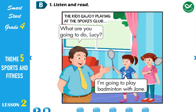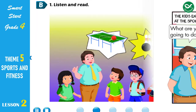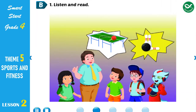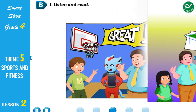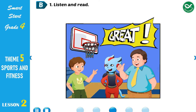B. 1. Listen and read. The kids enjoy playing at the sports club. Hey! It's Jane, Mai, and Charlie. Okay, kids, find something to play. What are you going to do, Lucy? I'm going to play badminton with Jane. Ben, what are you going to do? I'm going to play table tennis with Mai. What are you going to do, Charlie? I'm going to go bowling with Alfie. What about you, Tom? What are you going to do? I'm going to play basketball with you, Daddy. Great!